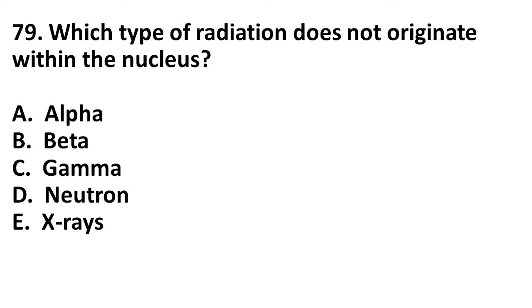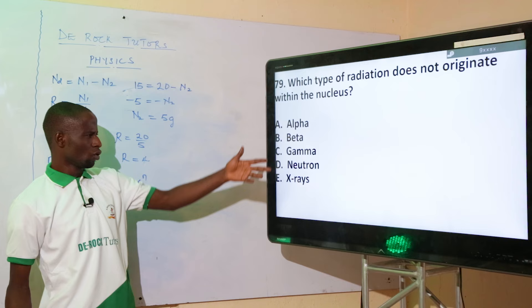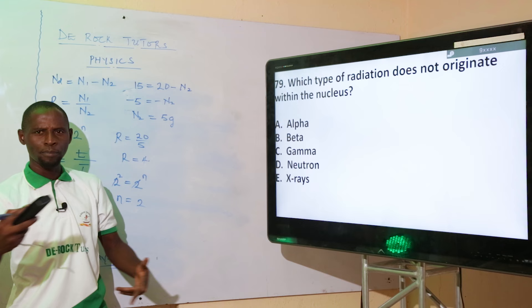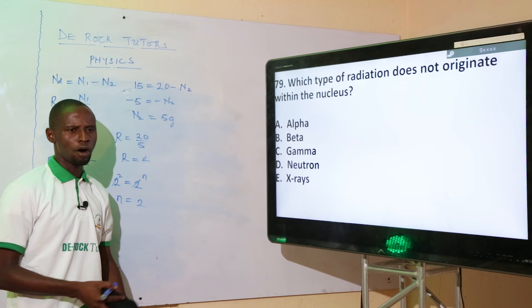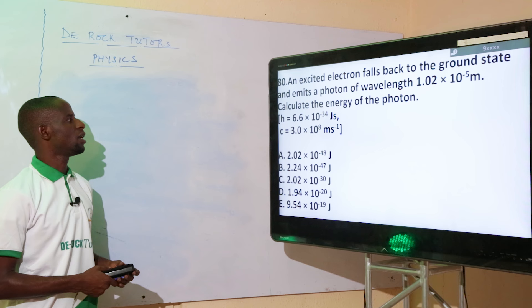Which type of radiation does not originate within the nucleus? Alpha, beta, and gamma all originate from nuclear disintegration. Neutrons are also present inside the nucleus. X-rays, however, are produced from electrons — not from within the nucleus. So the correct option is option E: X-rays.